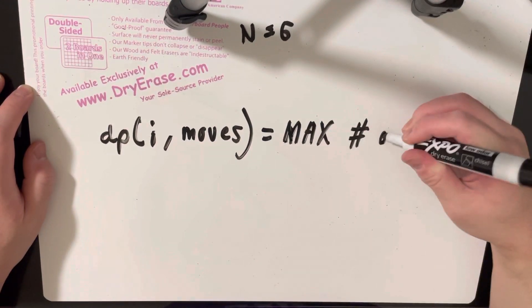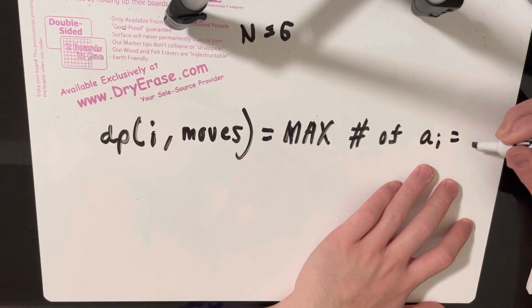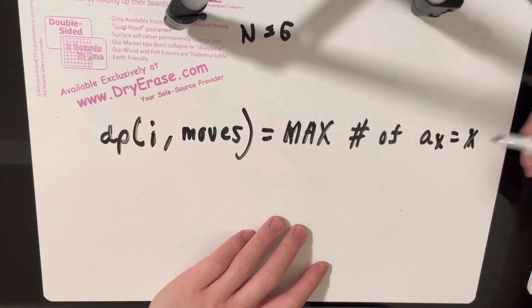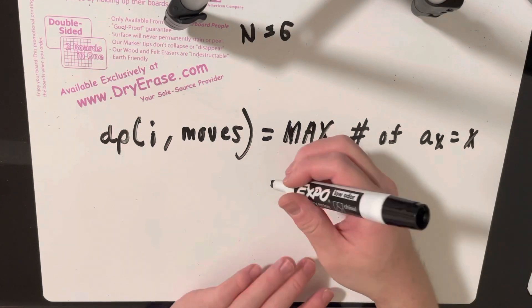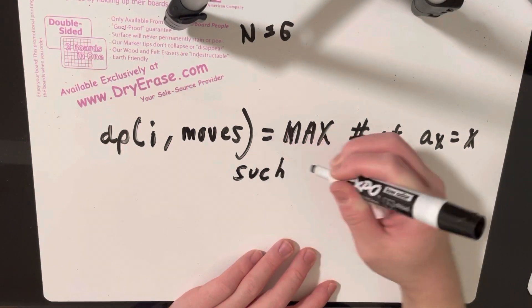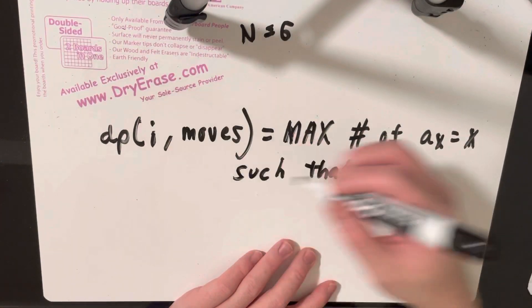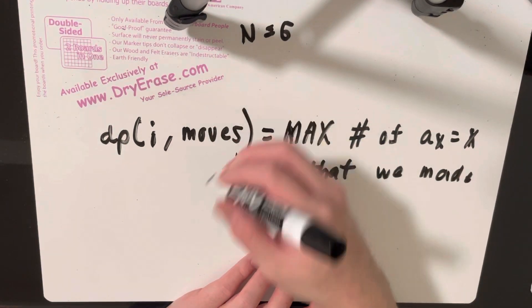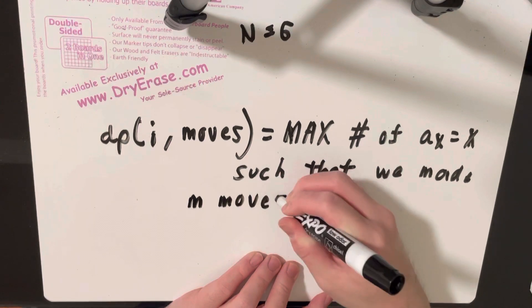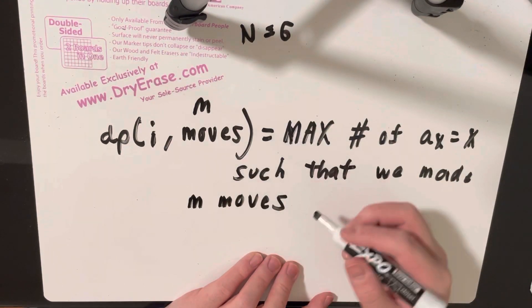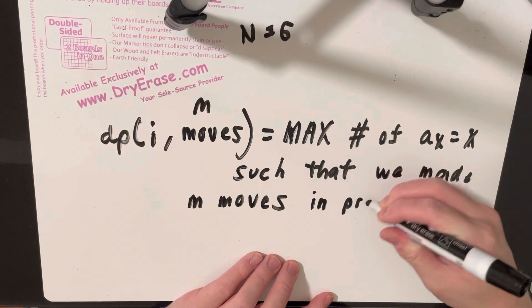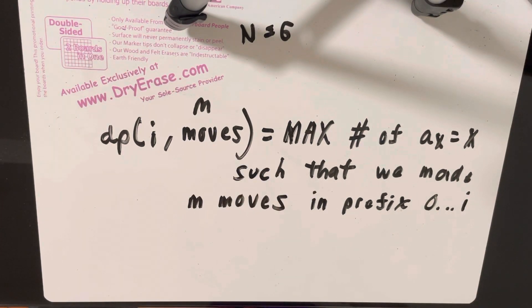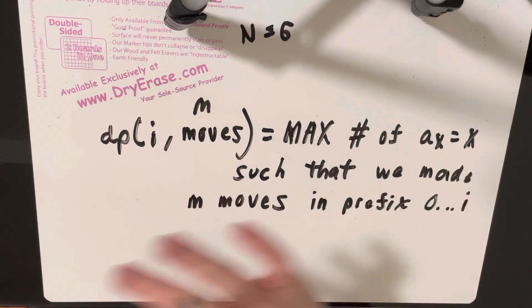So this is equal to the max number of pairs such that a_i is equal to i. I guess I'll use a different variable here. a_x is equal to x because I don't want to mix up these variable names. Such that we've considered the prefix of i such that we made m moves, so DP at i and m, in the prefix 0 to index i. So this is how we can create a DP state.